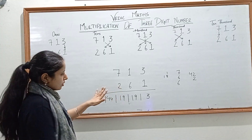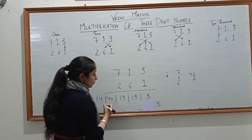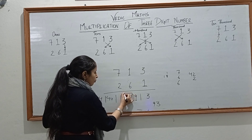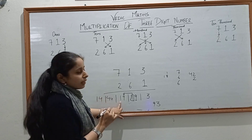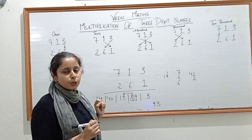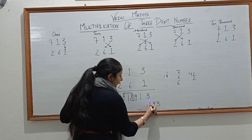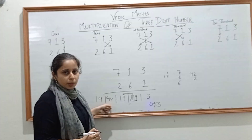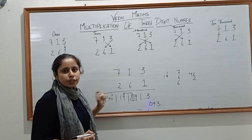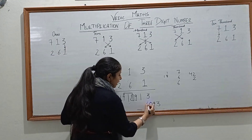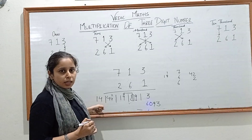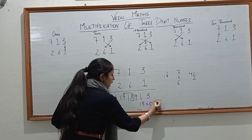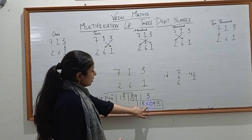For the final answer: write 3 for the units place. For the tens place, write 9 and carry 1 forward to 19, giving 19 plus 1 = 20 — write 0 and carry 2 forward. 44 plus 2 gives 46 — write 6 and carry 4 forward. 14 plus 4 gives 18. The final answer is 186093.